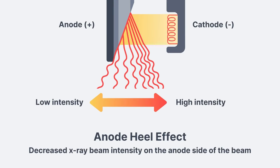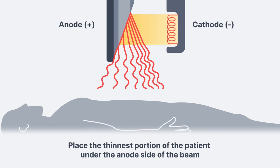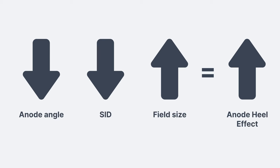In summary, the anode heel effect is the change in beam intensity across the length of the x-ray field. Specifically, the anode side has fewer photons and the cathode side has more photons — the anode side is weaker and the cathode side stronger. Remember that the anode heel effect can be used to our advantage by placing the thinnest portion of the patient under the anode side and the thickest part under the cathode side. Finally, three changes can increase the anode heel effect: first, decreased anode angle; second, decreased SID; and third, increased field size.